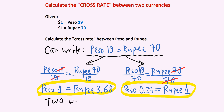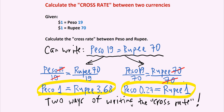These are the two ways of writing the cross rate between the peso and the rupee. Here we have 1 peso equals 3.68 rupees — that's how many rupees per 1 peso. But we could also look at the exchange rate in terms of how many pesos per 1 rupee, and we got 0.27 pesos per 1 rupee.